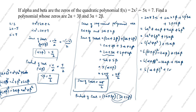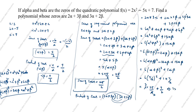Now substituting values: α + β = 5/2 and αβ = 7/2. Product = 6 × (5/2)² + 1 × (7/2) = 6 × 25/4 + 7/2 = 150/4 + 7/2 = 75/2 + 7/2 = 82/2 = 41. So the product of zeros = 41.